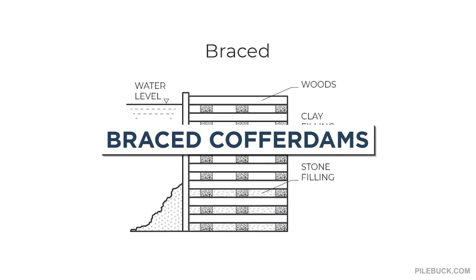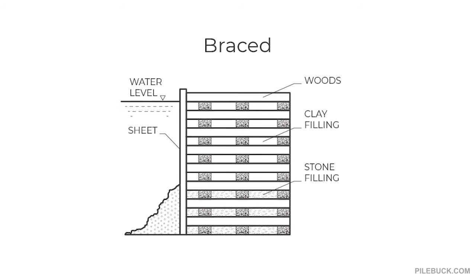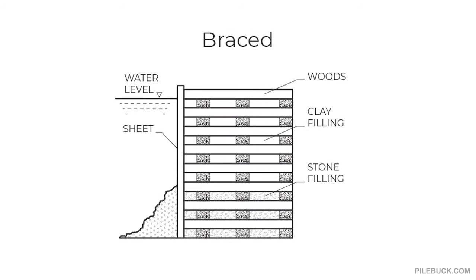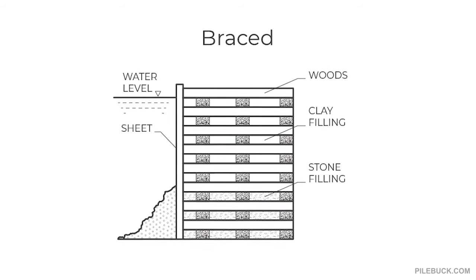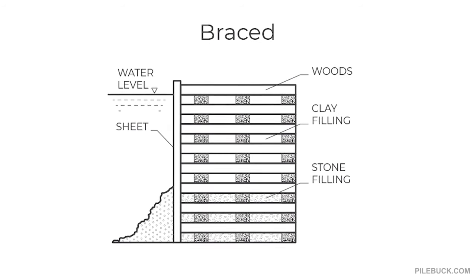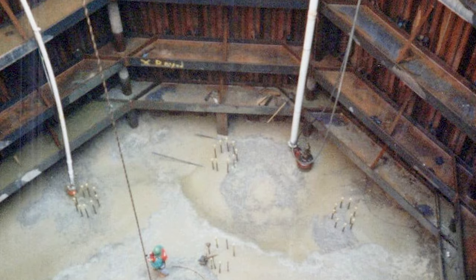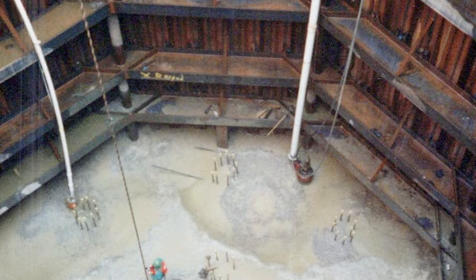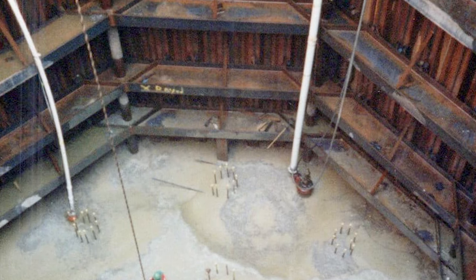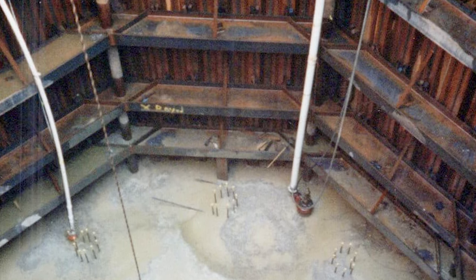Braced coffer dams consist of a single wall of sheet pile supported by struts, which prevents the wall from collapsing inward. Braced coffer dams are typically used for smaller work areas. You may see this type of coffer dam used in the repair of bridge piers and abutments.